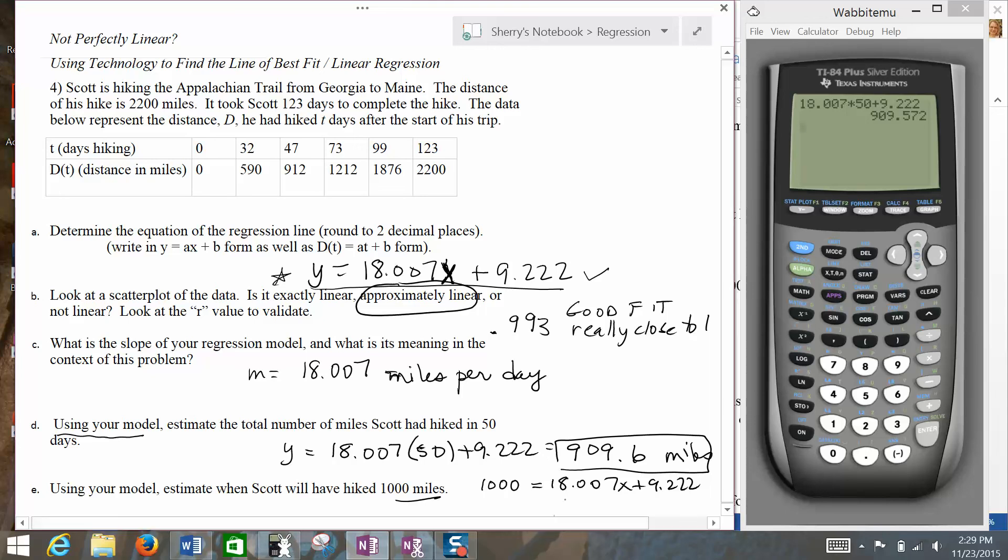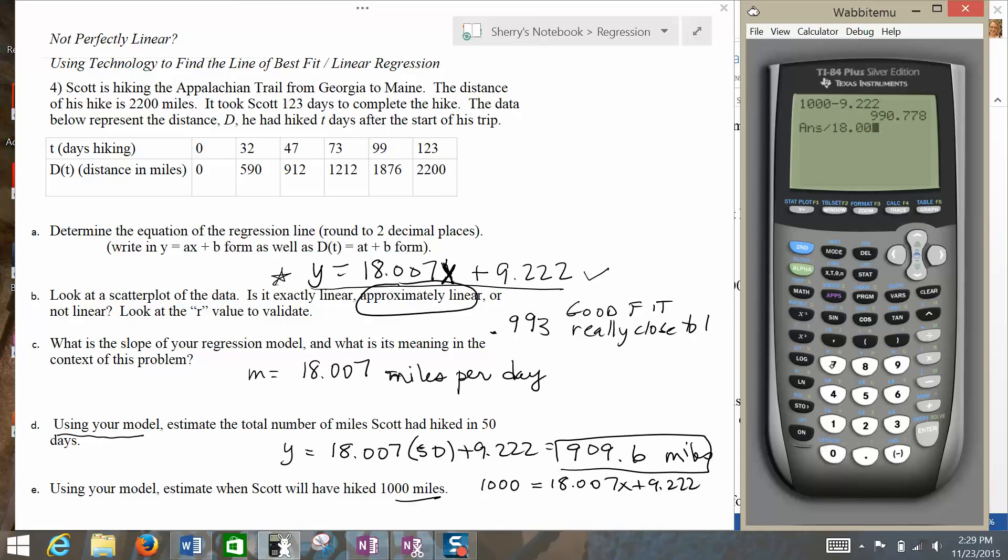In order for me to finish this particular equation then, what I need to do is just solve for X. I'm out of space, so I'll just talk about the steps here. I'm going to start by subtracting 9.222 from each side, so I'm going to have 1,000 minus 9.222. Then I'll need to divide both sides by 18.007 to finish getting the X by itself. And in this particular case, I should expect to hit 1,000 miles after about 55 days.